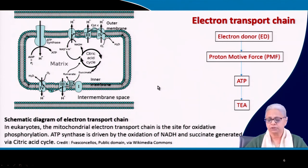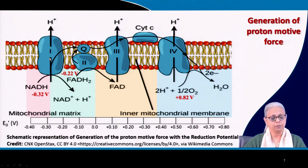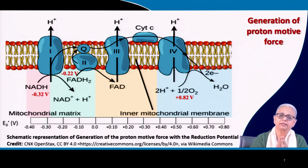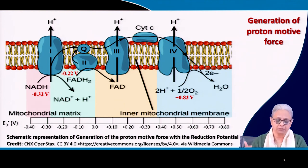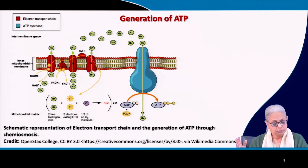Looking at reduction potentials: from complex 1 to 4, the reduction potential goes from negative E0' values to positive E0' values — similar to the electron tower. This shows how electrons available from NADH pass through to the terminal electron acceptor, helping generate proton motive force, which in turn is used for ATP generation.